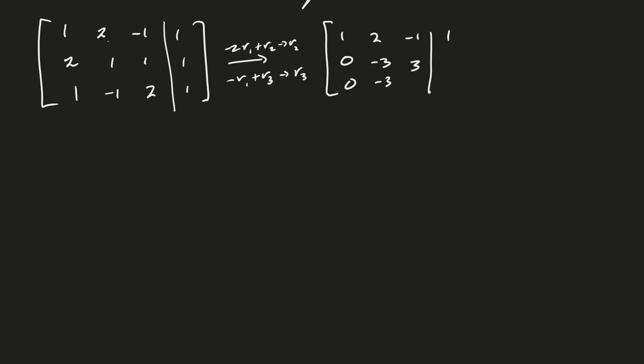And then, where are we? Minus 1 times minus 1 is positive 1, plus 2 is 3. And then, for the last part, we have minus 2 plus 1 is minus 1. And then, for the last one, we have minus 1 and 1 is 0.